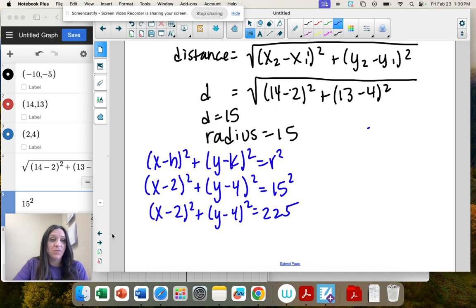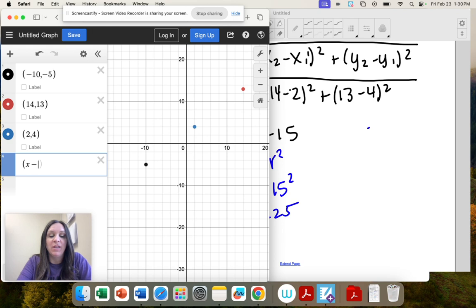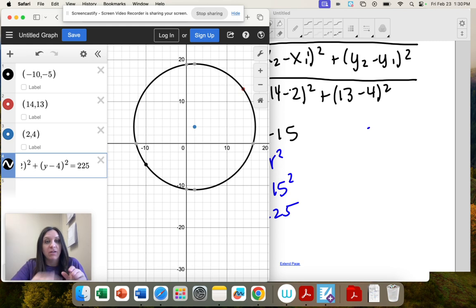And guess what? I'm going to check my answer, right? I really want you to do that. x minus 2 squared plus y minus 4 squared equals 225. Look, our center is right where we knew it would be, and it goes through those two points all the way across. That's the diameter. So we got it right.